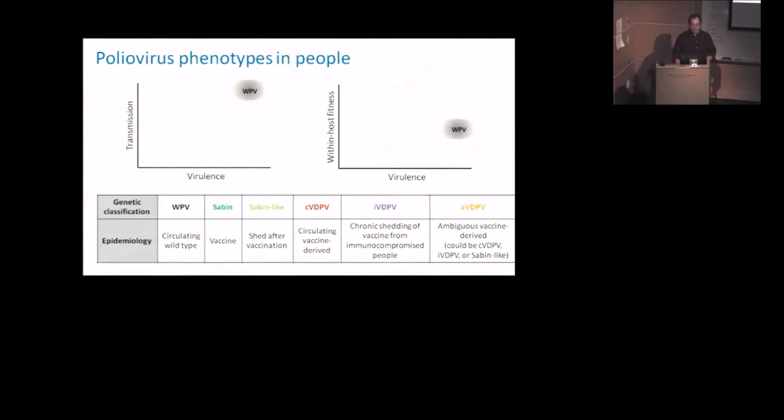So the three phenotypic axes that I'm interested in are transmission and virulence. Virulence is how likely it is to cause paralysis in this case. Transmission is how easy it is to pass from person to person. And then there's also the within-host fitness, which is a kind of vague term that I mean, how good is the virus at staying in a single person? As distinct from passing from person to person, it's from staying within a single host once an infection has started.